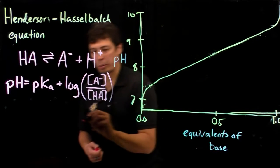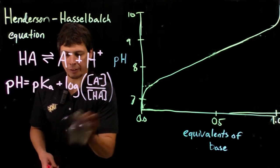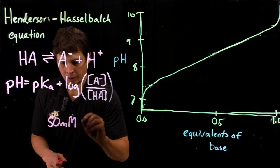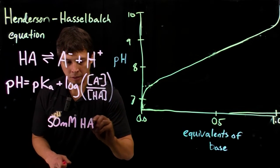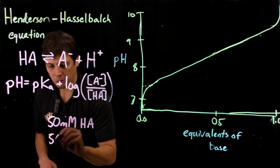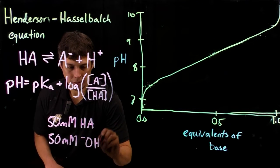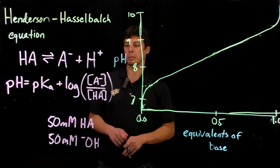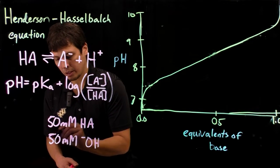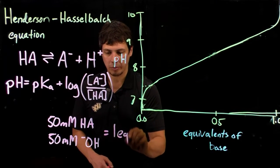If we have 50 millimolar of acid in a test tube, when we add 50 millimolar of hydroxide, either sodium hydroxide or potassium hydroxide, or your favorite strong hydroxide, then this is equal to one equivalent.